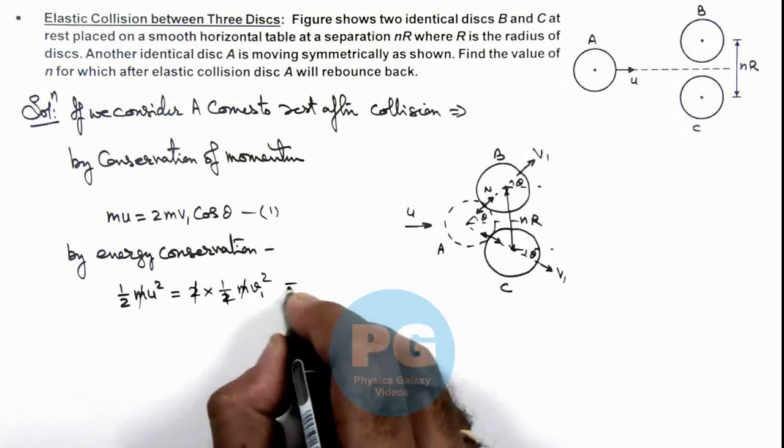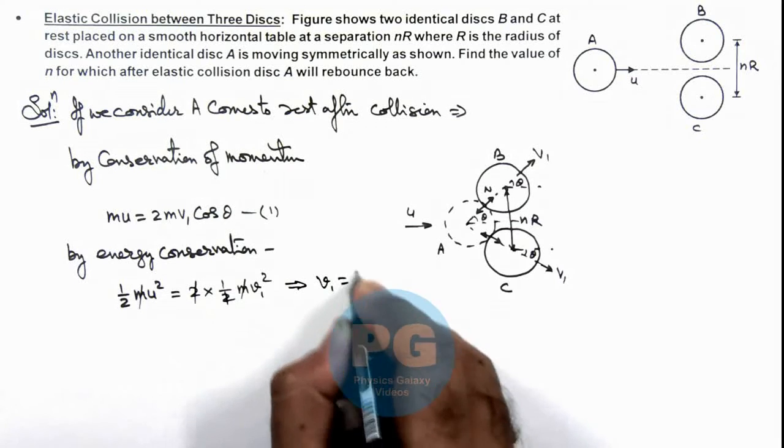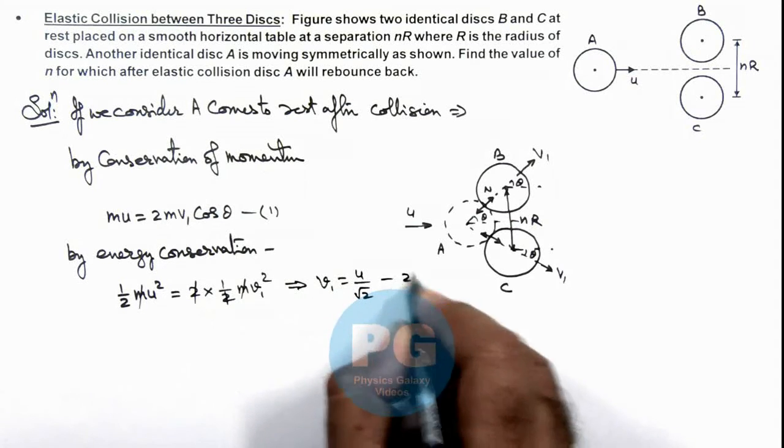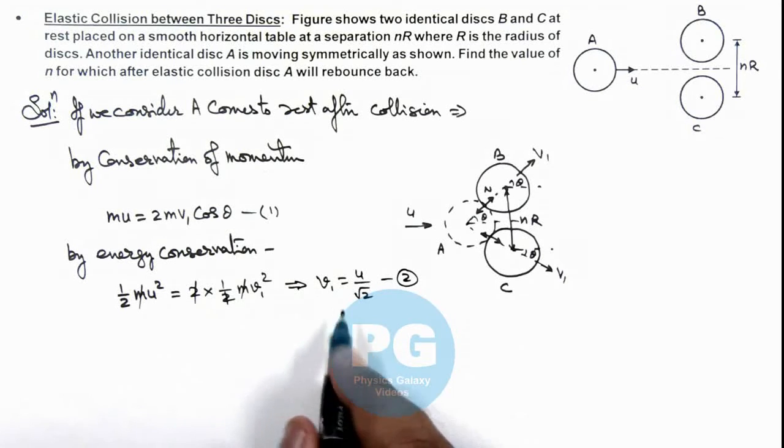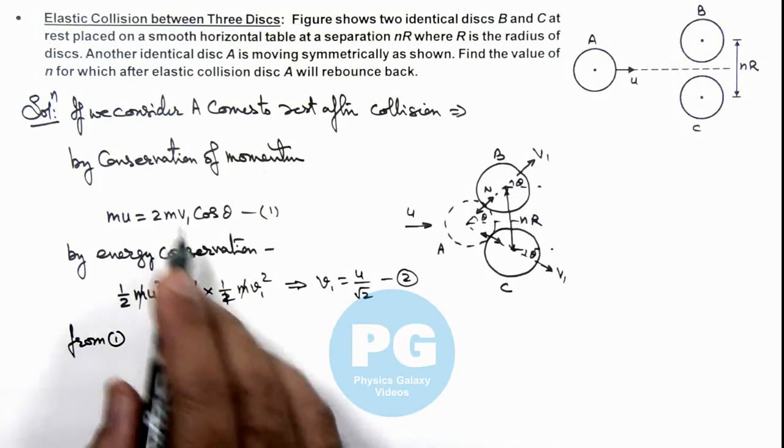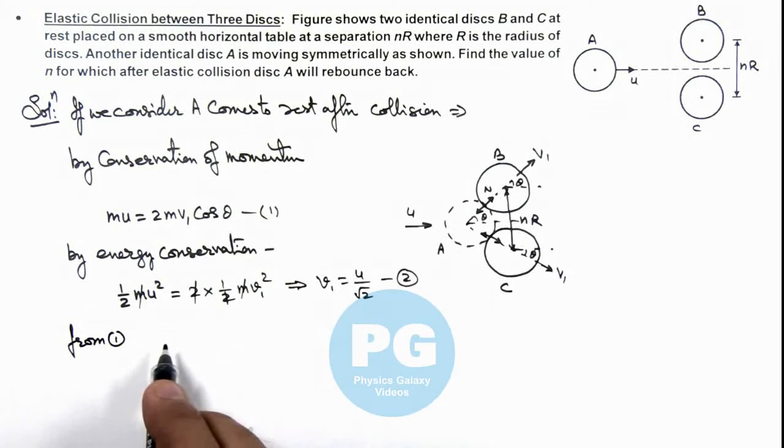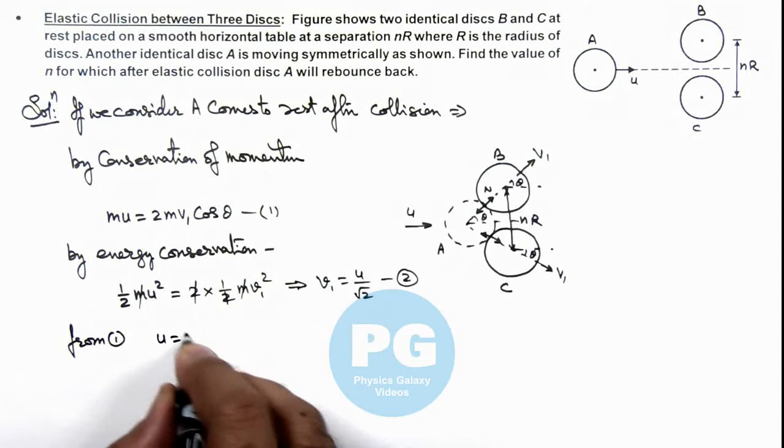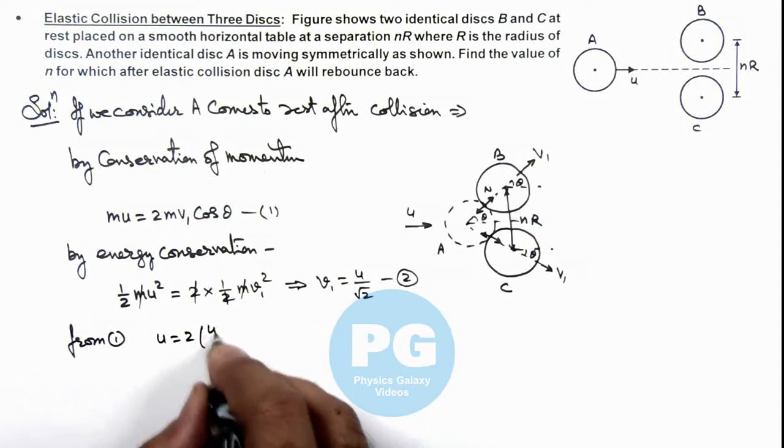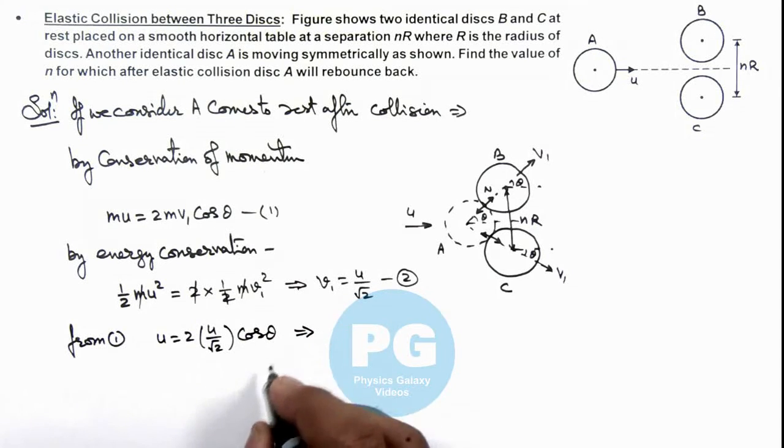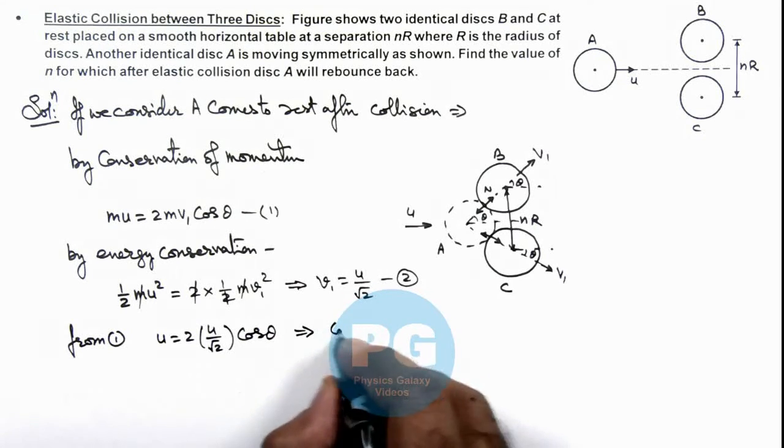Solving this will give us the value of v1 equal to u by root 2. Say this is our second equation. Then from equation 1, we can get the value of v1. If we substitute u by root 2, then we can see u is equal to twice of u by root 2 multiplied by cos theta, which implies the value of cos theta is root 2 by 2.